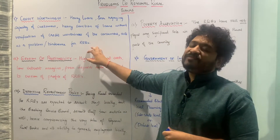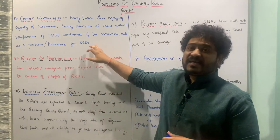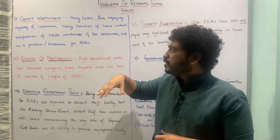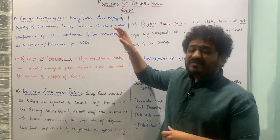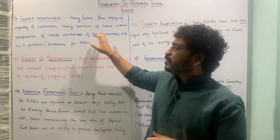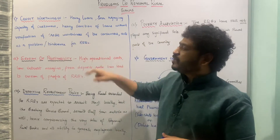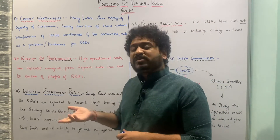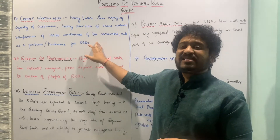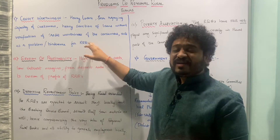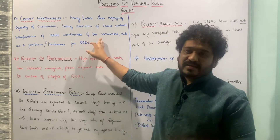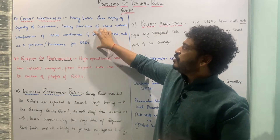The first problem is about creditworthiness of the consumers. Heavy loans are given to borrowers who have poor creditworthiness or poor capacity to repay. The verification process is violated at times, and as a result creditworthiness is not properly considered. These loans later create a problem and act as a hindrance for the regional rural banks.